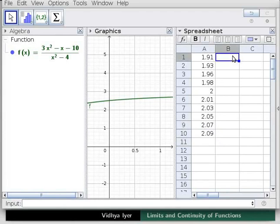In cell B1, that is column B, cell 1, type the following ratio of values. First, the numerator in parenthesis: 3A1 in parenthesis, caret 2, minus A1, minus 10, followed by division slash. Now, the denominator in parenthesis: A1 in parenthesis, caret 2, minus 4 and press Enter.